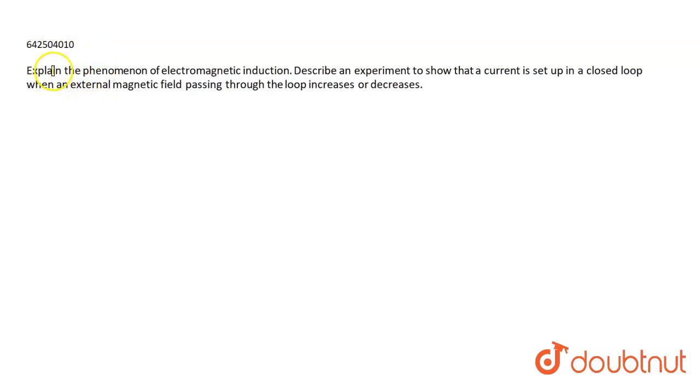The question is: Explain the phenomena of electromagnetic induction. Describe an experiment to show that a current is set up in a closed loop when an external magnetic field passing through the loop increases or decreases.